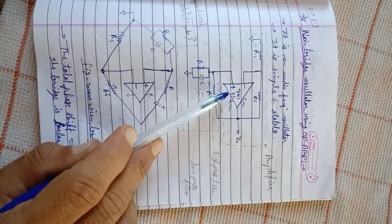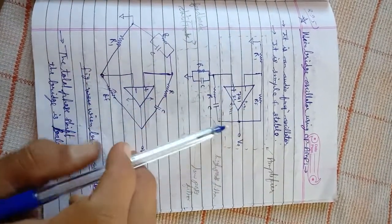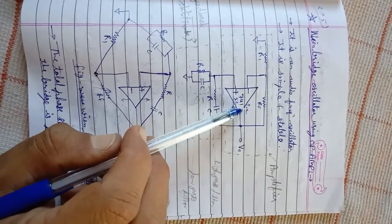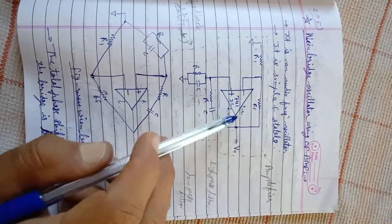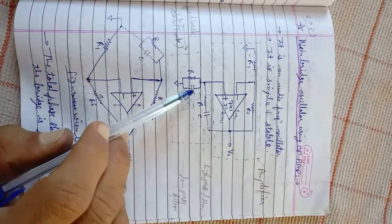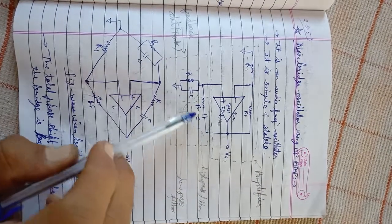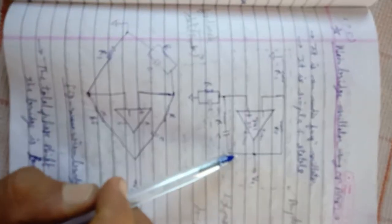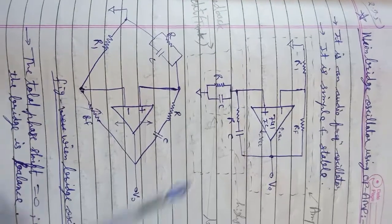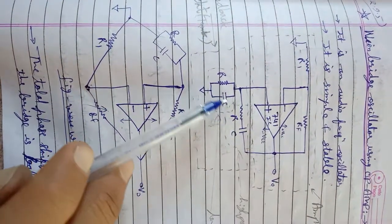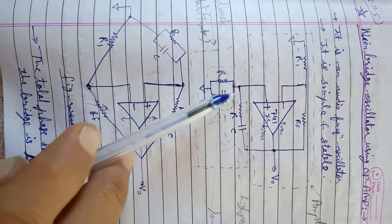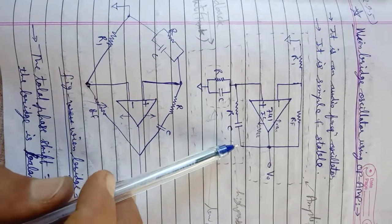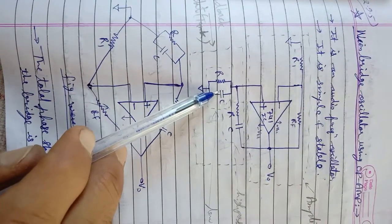Circuit की working: output से op-amp के दोनों inputs पर signal feed किया जाता है। एक arrangement R1 और Rf है — इनके द्वारा signal inverting input terminal पर दिया जाता है और इसका main purpose gain को control और set करना होता है — amplifier के gain को limit करना। दूसरा — RC series और RC parallel combination है जिसके through output से non-inverting input पर signal feed होता है। RC network का output — Vf — input signal का one-third होता है।